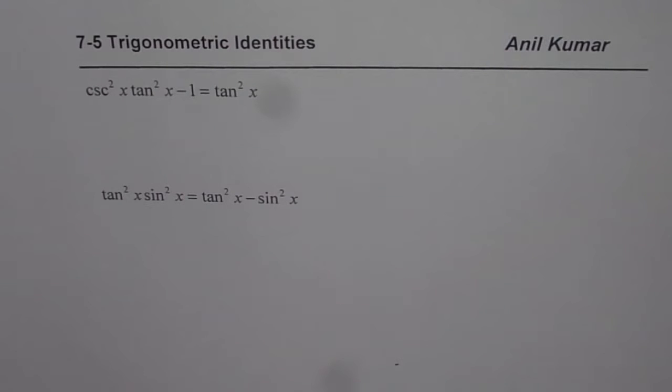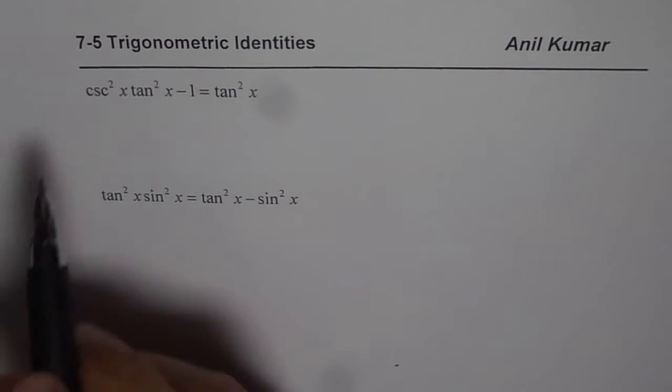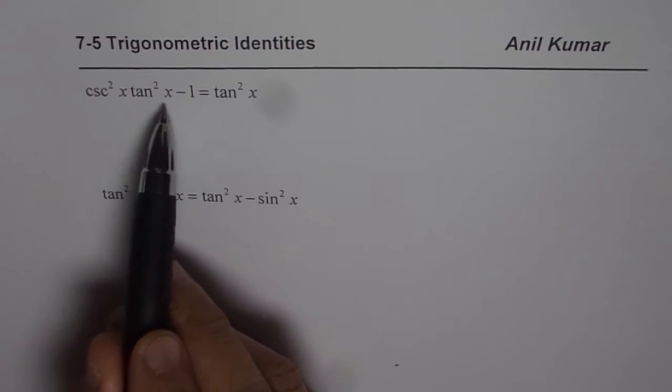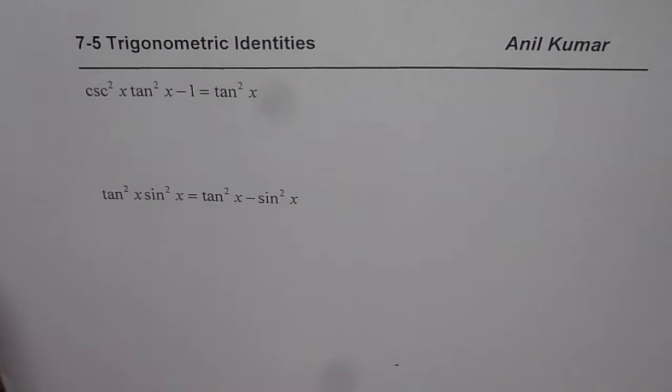So we have two very difficult questions here and now let us see how to solve them in just three steps. First one is cosecant square x tan square x minus 1 equals to tan square x.